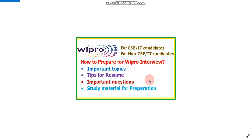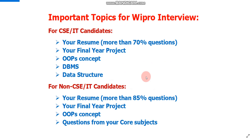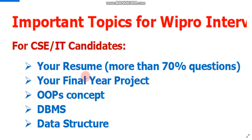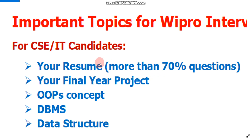First, let's discuss the important topics for CSE and IT candidates. You should focus on your resume first — they will ask more than 70% of questions from your resume, so your resume is very important. Don't mention everything you know like C, Java, C++, Python. Mention only those things you really know, because they are expecting a candidate who is good in basics and has good communication — not someone who knows everything as a fresher.